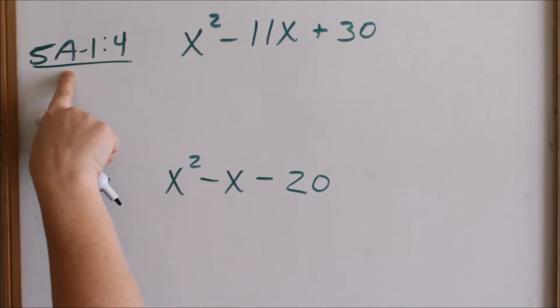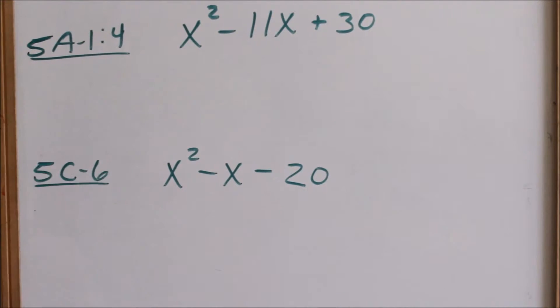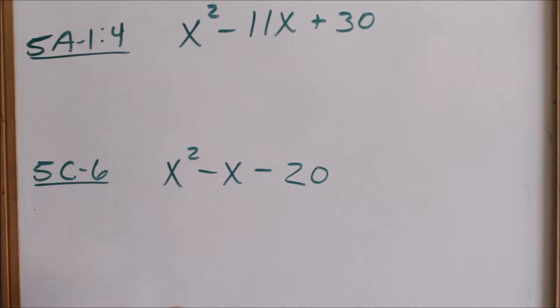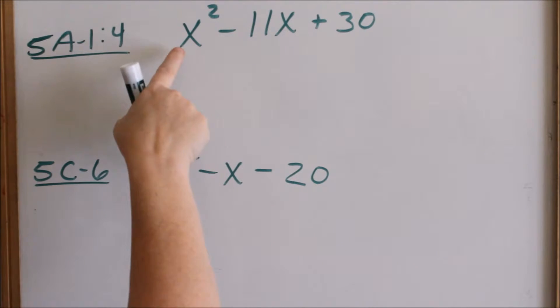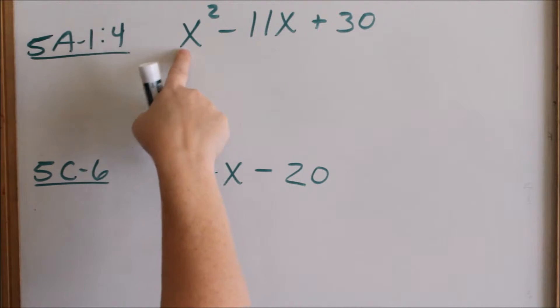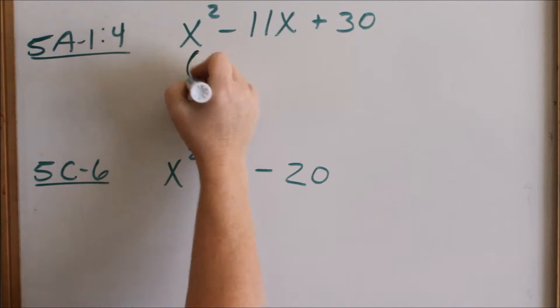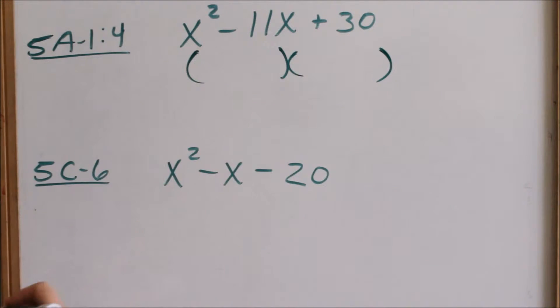Still on page 5A1, we're looking at problem 4. Now we're not in a positive world anymore. Again, look to see: can you factor something out? 1, 11, 30 — no, you can't factor anything out, so you're ready to go to two parentheses.